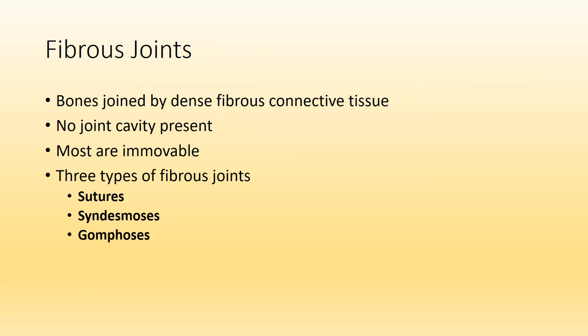From here on out, we will focus on joints based on their structure. The three structural classifications of joints are fibrous, cartilaginous, and synovial. Starting with fibrous — as its name suggests, the material binding a fibrous joint together will be fibrous connective tissue. There is no joint cavity present, and for the most part fibrous joints are synarthroses or immovable joints. We can further break down fibrous joints into three types: sutures, syndesmoses, and gomphoses.